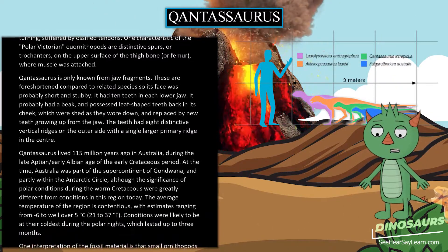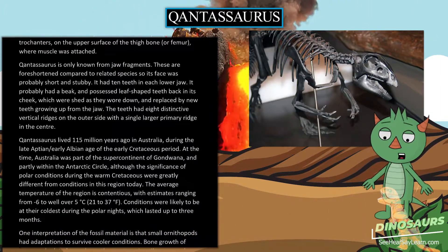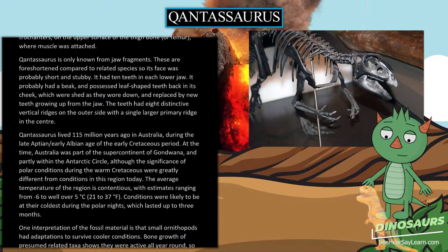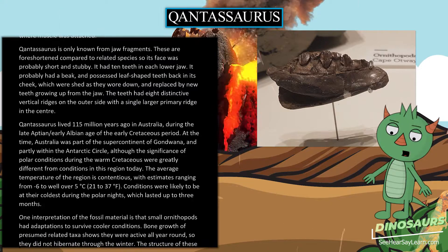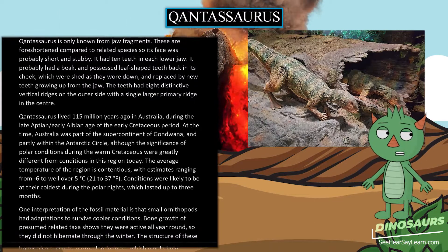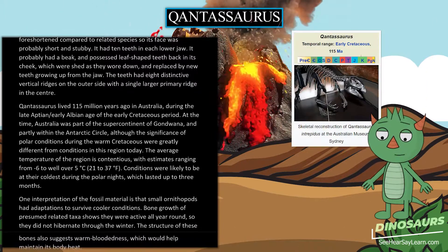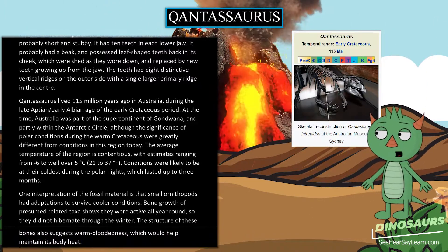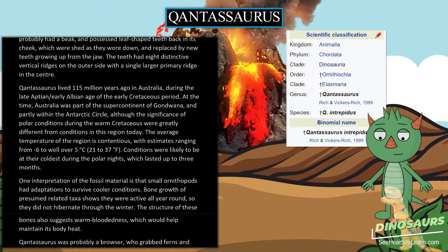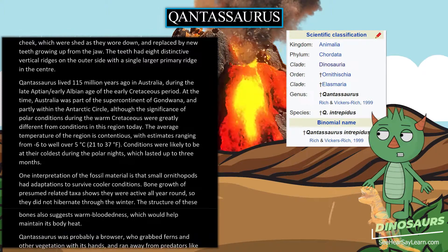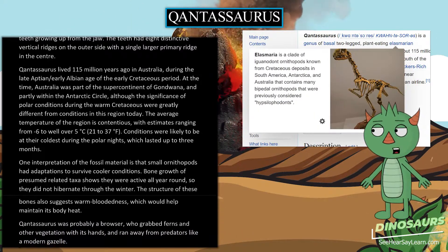Qantasaurus lived 115 million years ago in Australia, during the late Aptian to early Albian age of the early Cretaceous period. At the time, Australia was part of the supercontinent of Gondwana, and partly within the Antarctic Circle, although the significance of polar conditions during the warm Cretaceous were greatly different from conditions in this region today. The average temperature of the region is contentious, with estimates ranging from minus 6 to well over 5 degrees Celsius (21 to 37 degrees Fahrenheit). Conditions were likely coldest during the polar nights, which lasted up to three months.